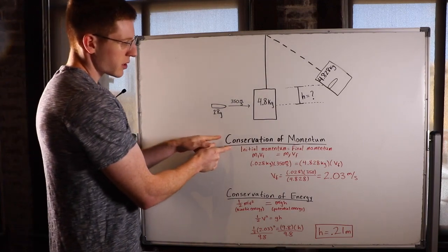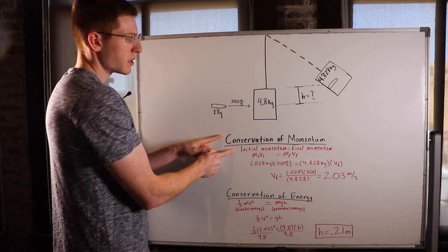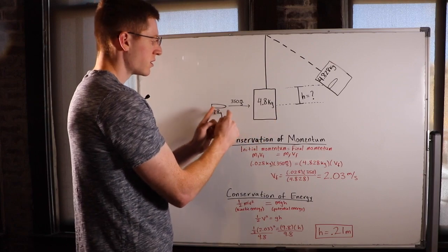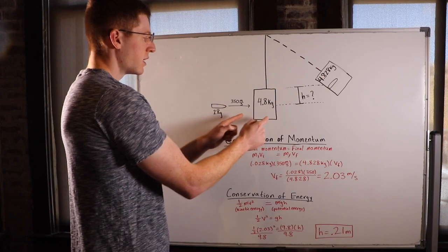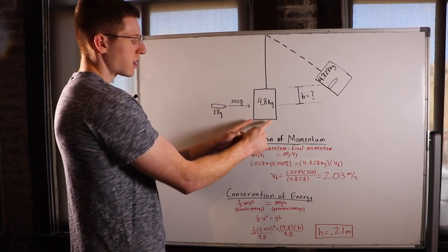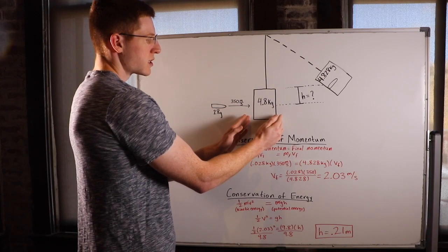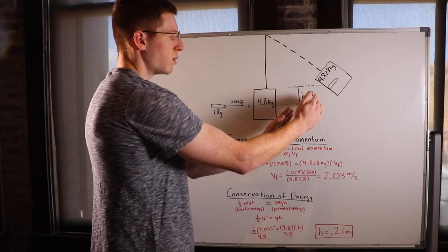So the first thing that you want to do is use the conservation of momentum to figure out how fast the bullet and the block combination are going to be moving at the instant that they collide. So we know the bullet initially comes toward the block and lodges itself in the block and then they continue moving on together.